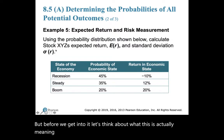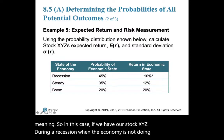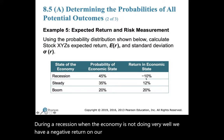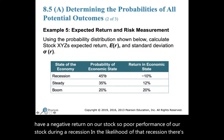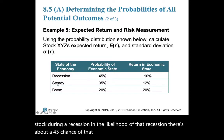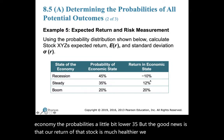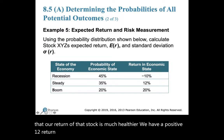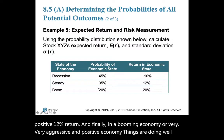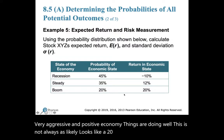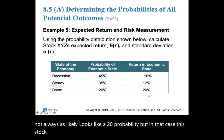For stock XYZ, during a recession — when the economy is not doing well — we have a negative return on the stock, and there's about a 45% chance of a recession occurring. In a steady economy, the probability is a bit lower at 35%, but the return is much healthier at positive 12%. Finally, in a booming economy, there's a 20% probability and the stock return is 20%.